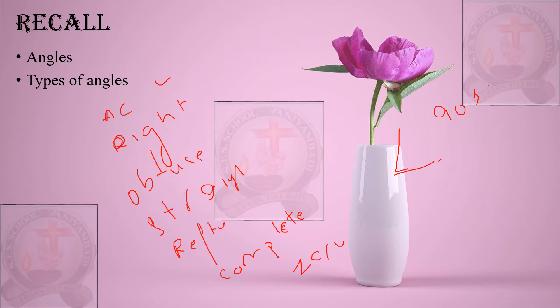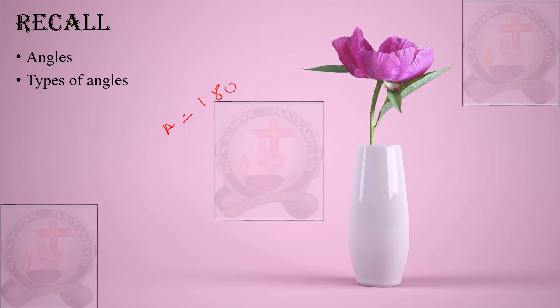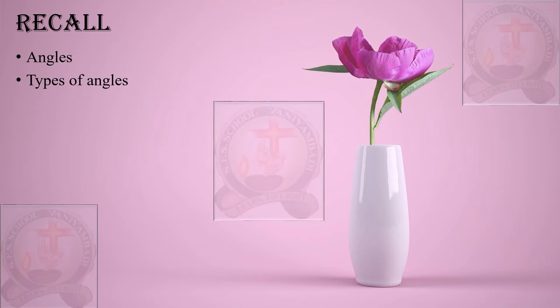An acute angle is one where the measure is less than 90 degrees. A right angle measures exactly 90 degrees. An obtuse angle measures more than 90 degrees but less than 180 degrees. A straight angle measures exactly 180 degrees.